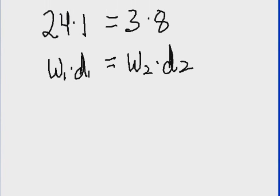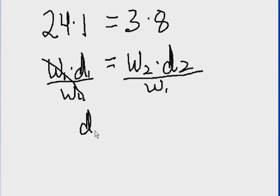Now, the next thing that we do is we're going to divide both sides by w1. If I do that, what's going to happen? This will cancel out, and it'll give me d1, distance 1, which is 1 foot, is equal to what?